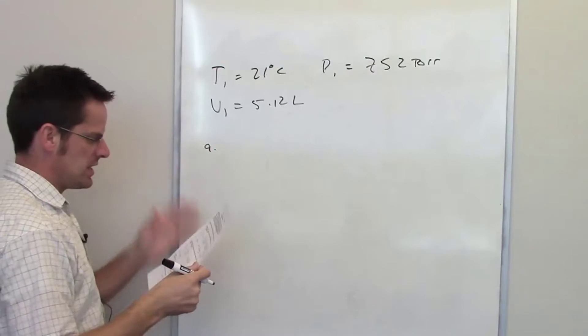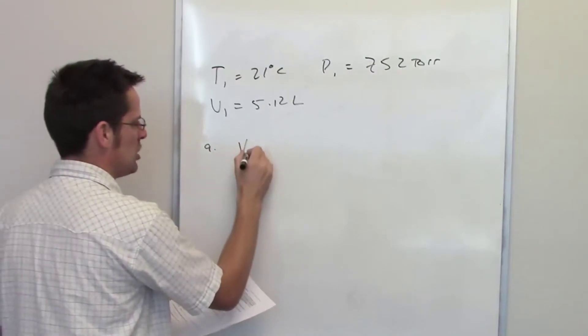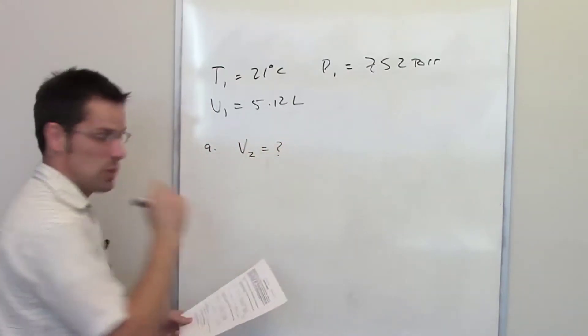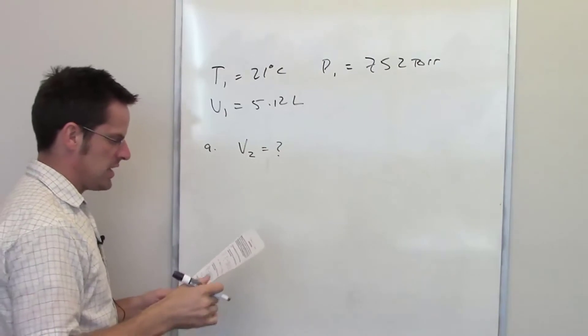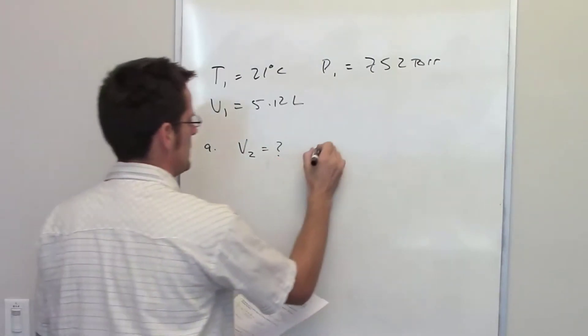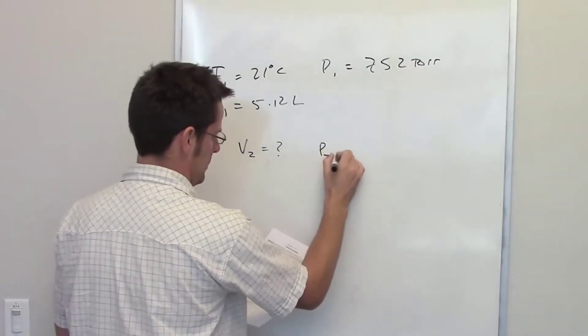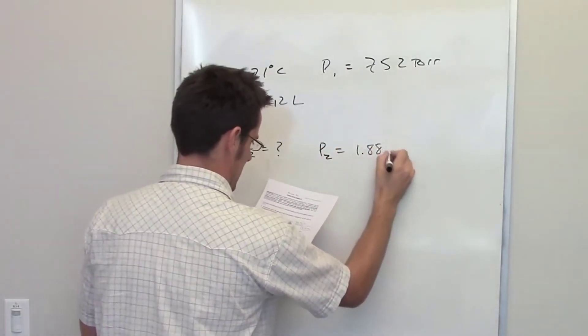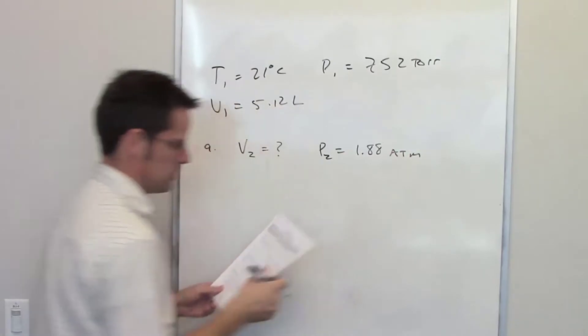In part A, it says calculate the volume, so V2 or V final is what we're trying to determine, if the gas will occupy if the pressure is increased to, in other words, P2 is going to be 1.88 atmospheres, while the temperature is held constant.